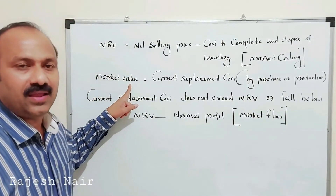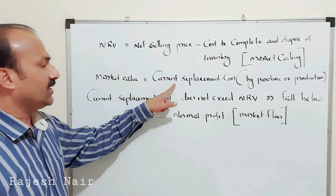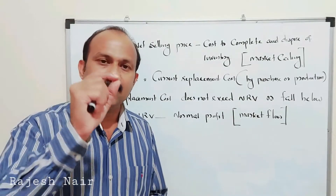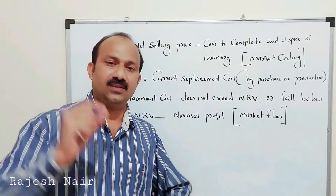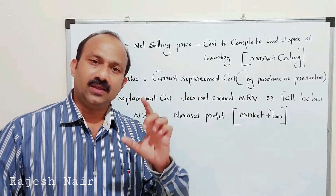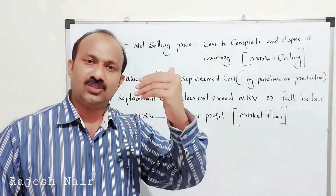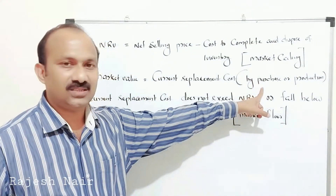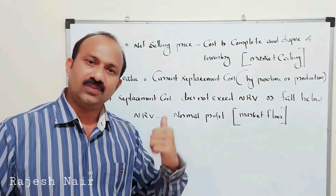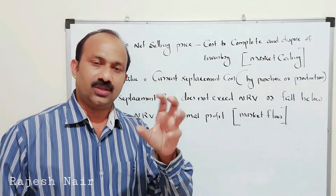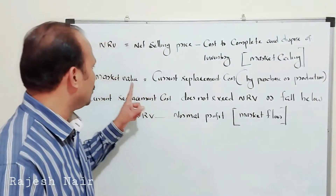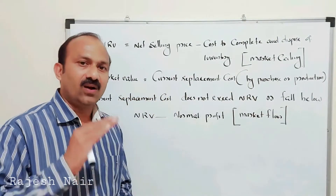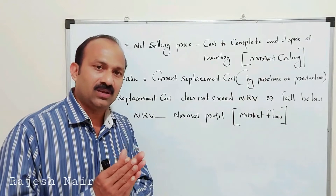The second term is Market Value, which is simply the current replacement cost of an inventory. Current replacement cost means the cost required to replace the inventory — whether by purchasing or producing that particular inventory. This is called the replacement cost of the product.